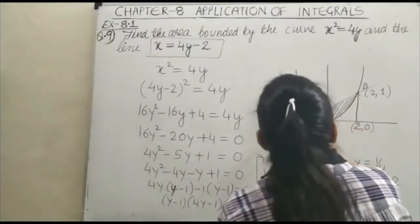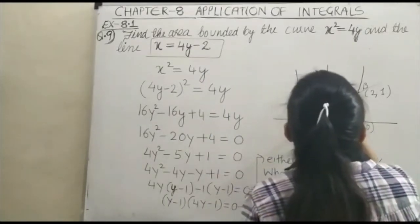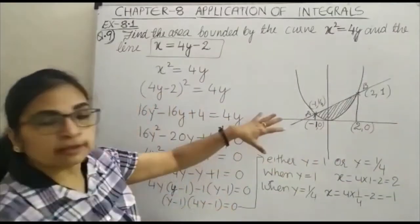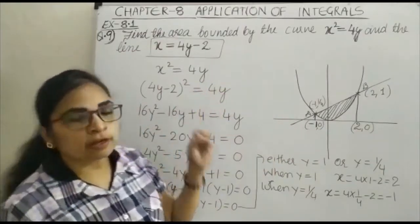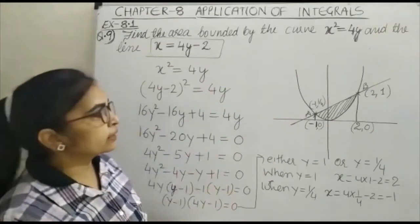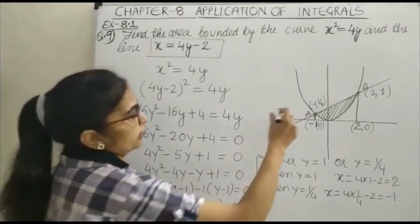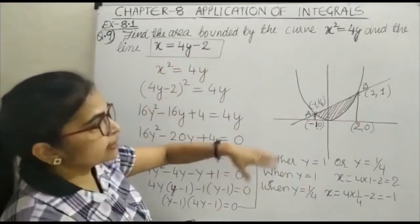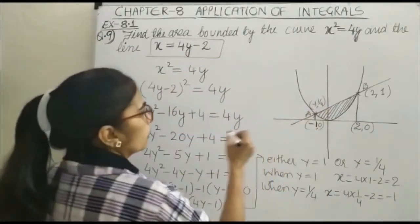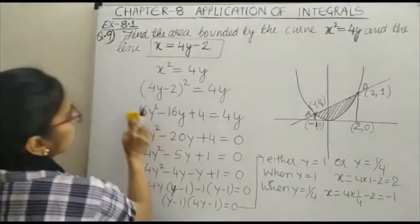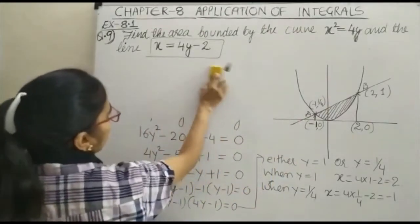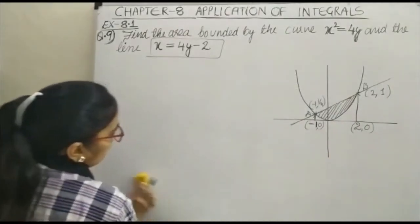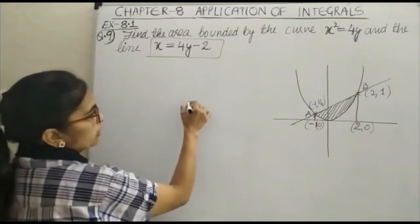This is the area we are supposed to calculate. The required area is the area under the line x = 4y - 2 minus the area under the curve x² = 4y. Let us now work this out.